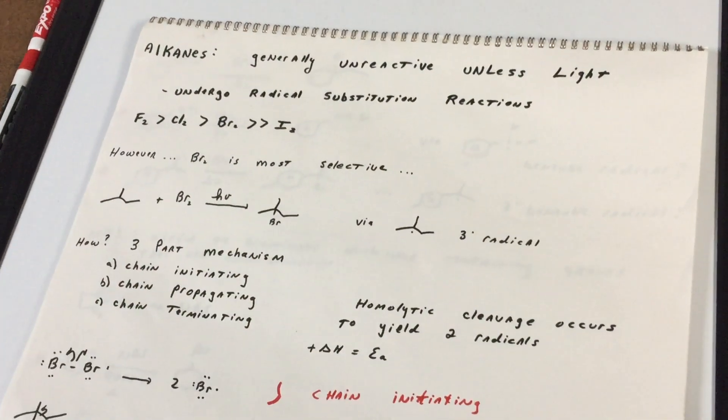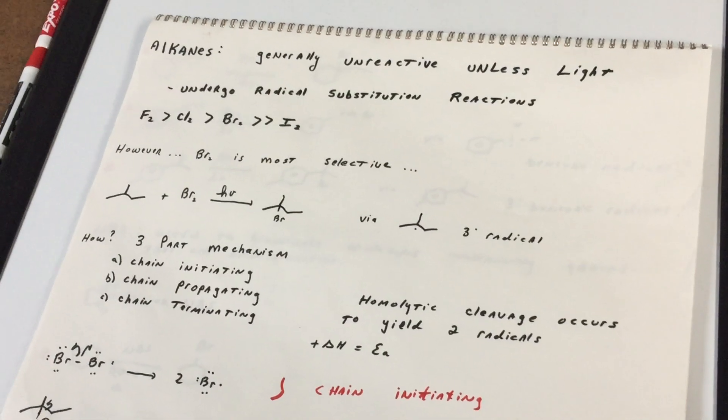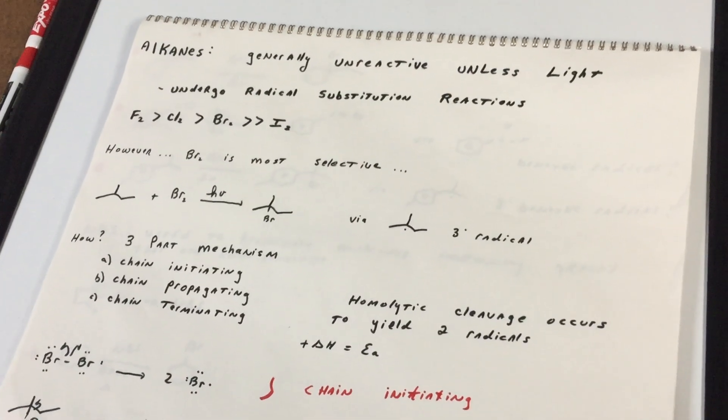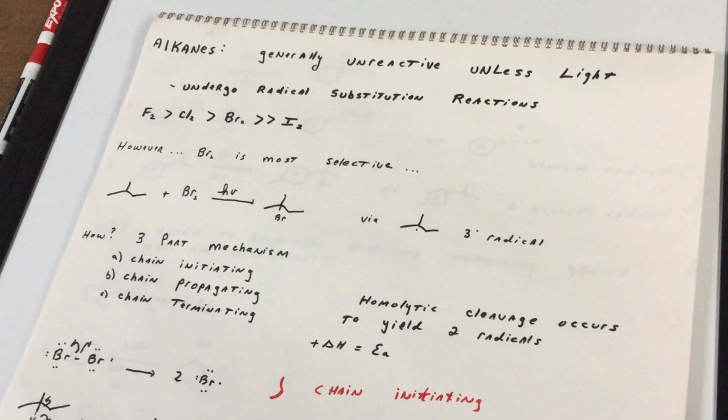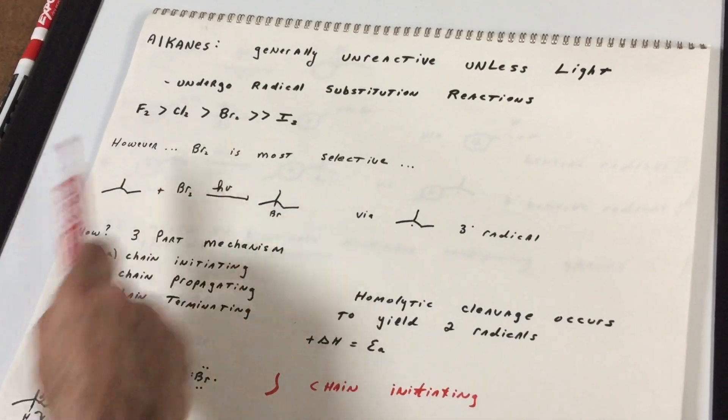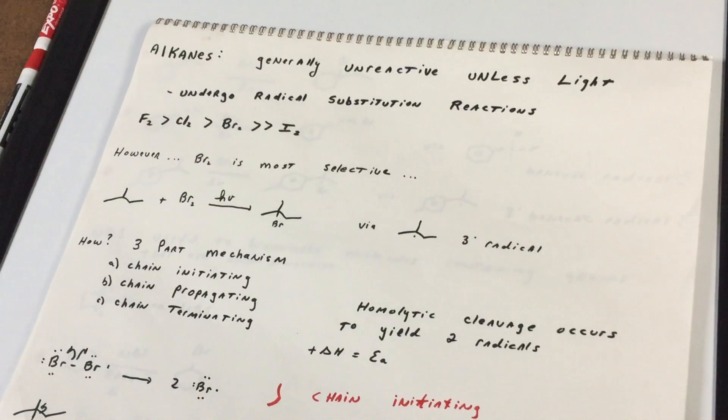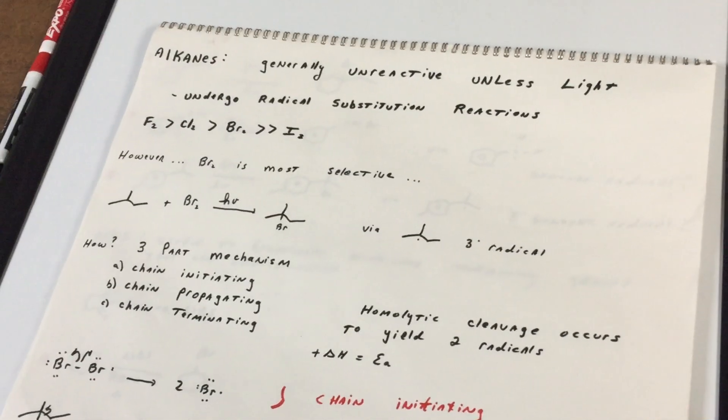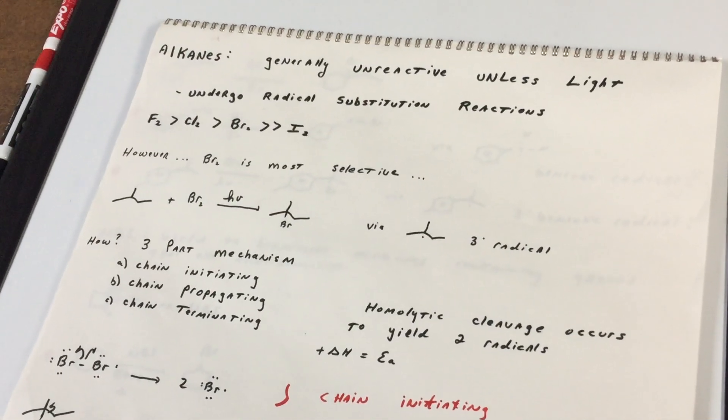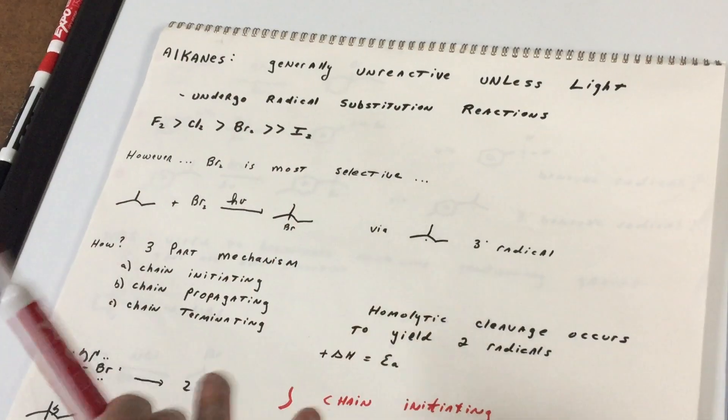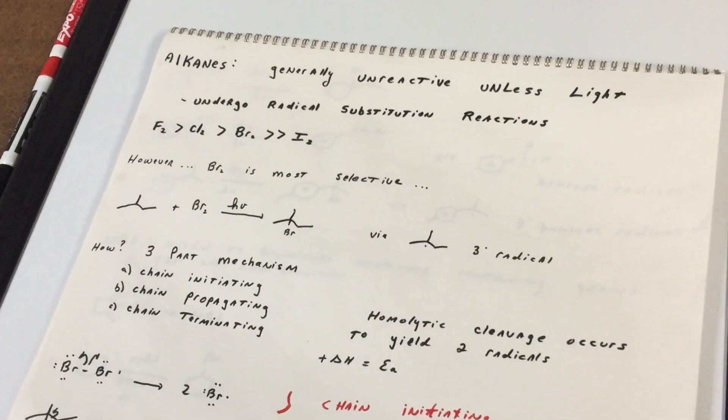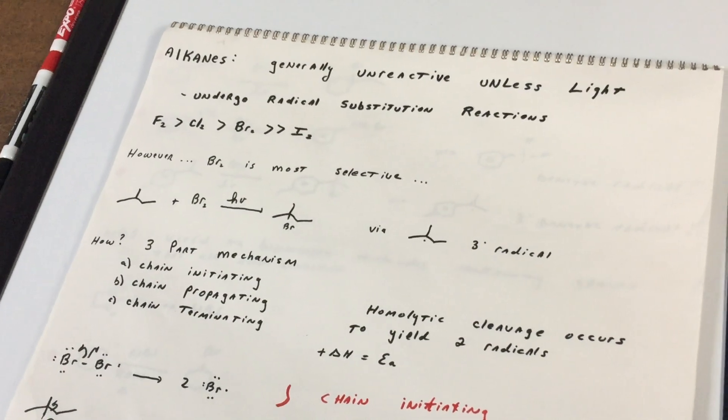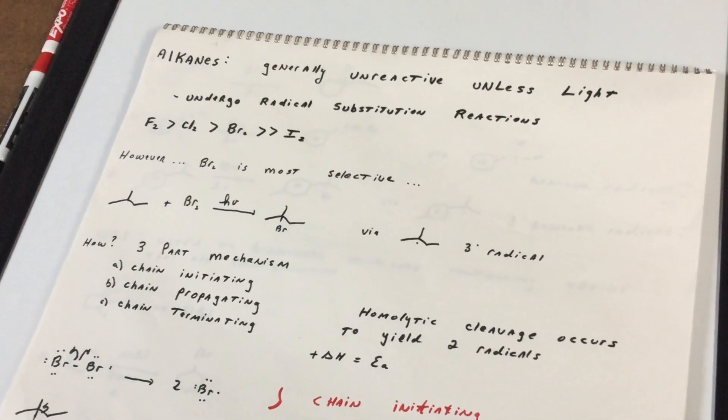Fluorine is very, very reactive and usually it results in explosive reactions. So we normally don't use much fluorine in alkane chemistry. Chlorine and bromine are the next two that we use the most common. Chlorine being the second most reactive, then bromine. Iodine is usually very, very slow, so you're not going to see too much reactions with iodine. However, the one that you have to really focus on for the DAT is bromine.